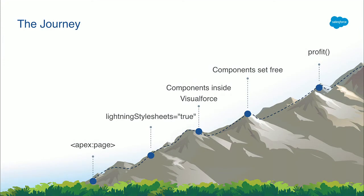This is the journey I'm going to take you on this afternoon. We all start with the Visualforce page, and then lightning:stylesheets equals true — we're going to talk about what this does and why it didn't work for our transition. Next, we'll talk about components inside Visualforce, which I think was a game changer in us successfully doing this. Moving on to setting our components free — making that transition to Lightning using the App Builder, dropping them on the page. And then you get to profit, where you're just writing Lightning components in Lightning, and at that point you're really living the dream.